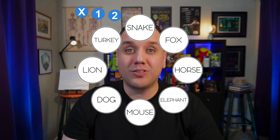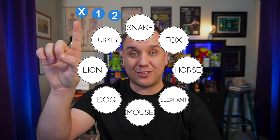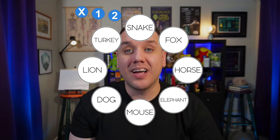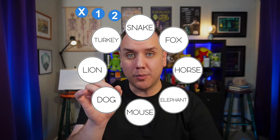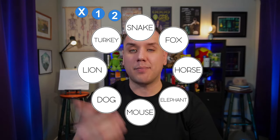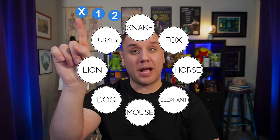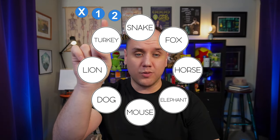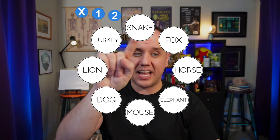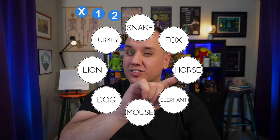I want you to take your finger or your cursor and put it on this little X right here. And in a minute, I'm going to ask you to use your number to count around these circles. So for example, if your number is 5, you start on the little X, and when you count to 1, you move to 1. When you count to 2, you move to 2. 3 is snake, 4 is fox, and 5 is horse, where you would stop.